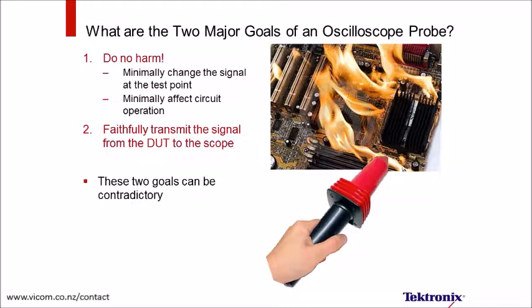When you connect a probe to a circuit, it will change the signal you're measuring and can affect the operation of the circuit. The probe tip is conductive, so it's going to draw some current to produce a voltage on the oscilloscope. Because the probe tip has to draw current, it's going to load or harm your circuit. This video is going to focus on two probe specifications related to probe loading: input resistance and input capacitance.